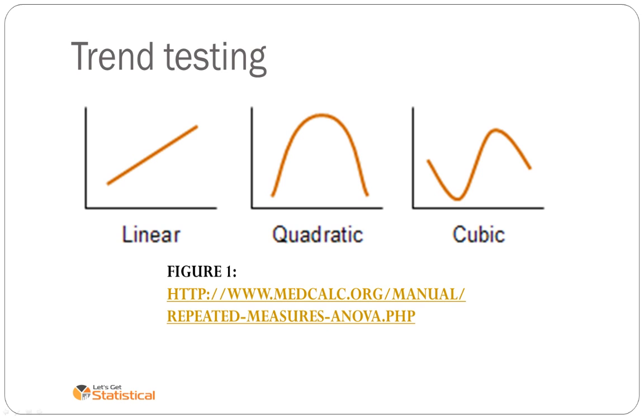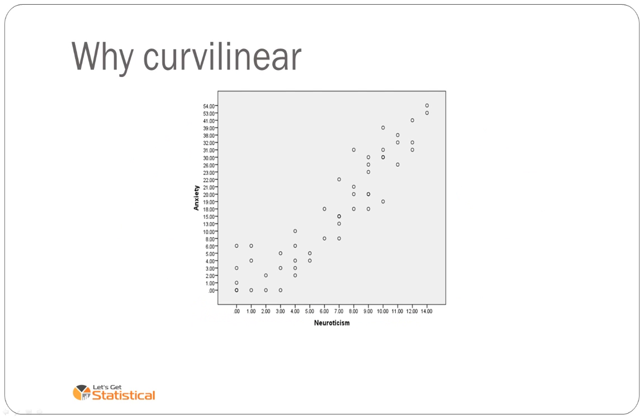So linear, quadratic and cubic trends look like this. Linear has no bumps, quadratic has got one inflection, cubic has got two. It could be argued that neuroticism, in this case, has got one trend or one bump rather than making it quadratic.